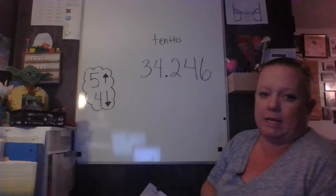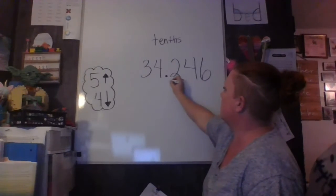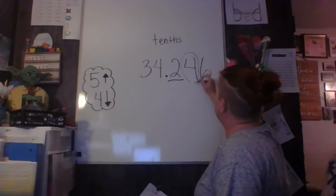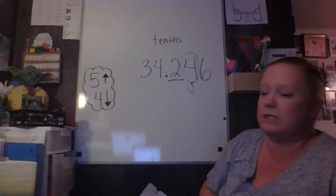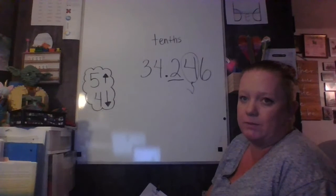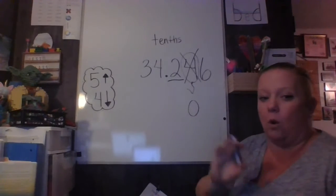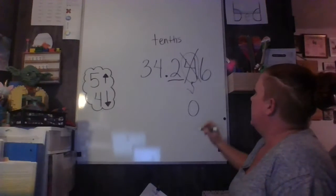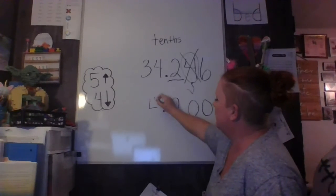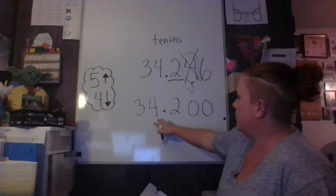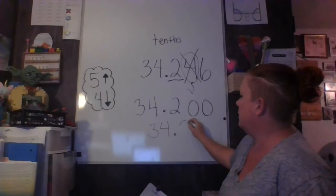This number, we're gonna round to the tenths place. We've got our ones, and then this is our tenths, so we're gonna underline the digit that we're rounding to and draw our balloon around the digit directly behind that number. We ask ourselves the two questions: is this number five and above, or four and below? It's four and below, so our balloon is going to pop. What's in there turns to zero, and that's the only thing that changes. Everything behind it turns to zeros, everything in front stays the same. So we have 34 and two tenths — we don't need that extra zero, so we can rewrite it as 34 and two tenths.